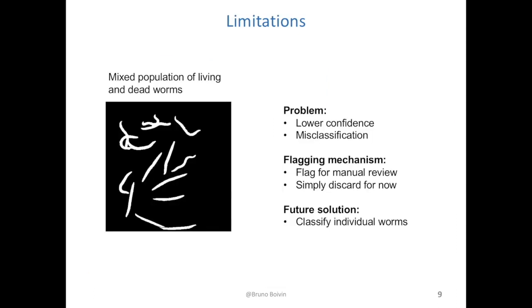I am presenting one such image which was misclassified. This one is hard to classify because there's about the same proportion of living worms — those that are bended — as dead worms — those that are flat and elongated. So it's hard to classify the population as a whole.